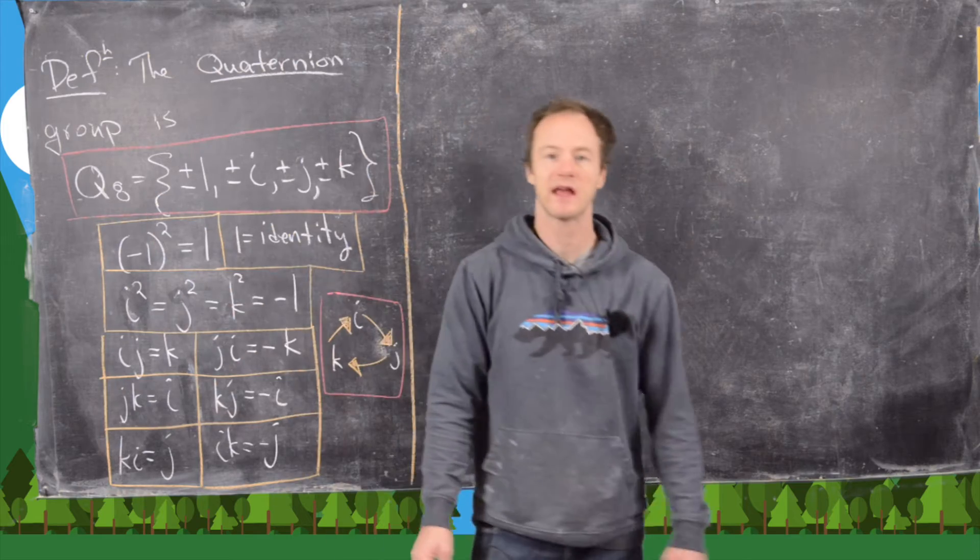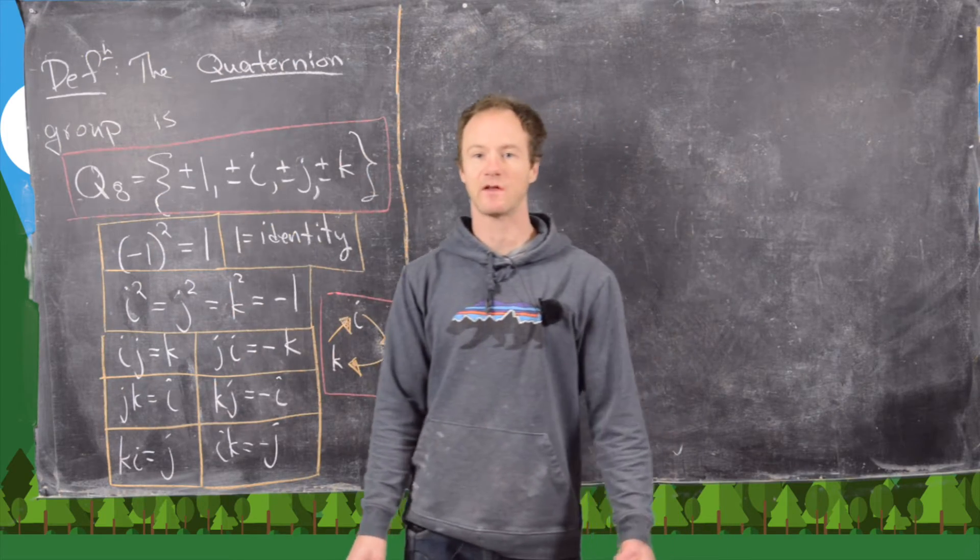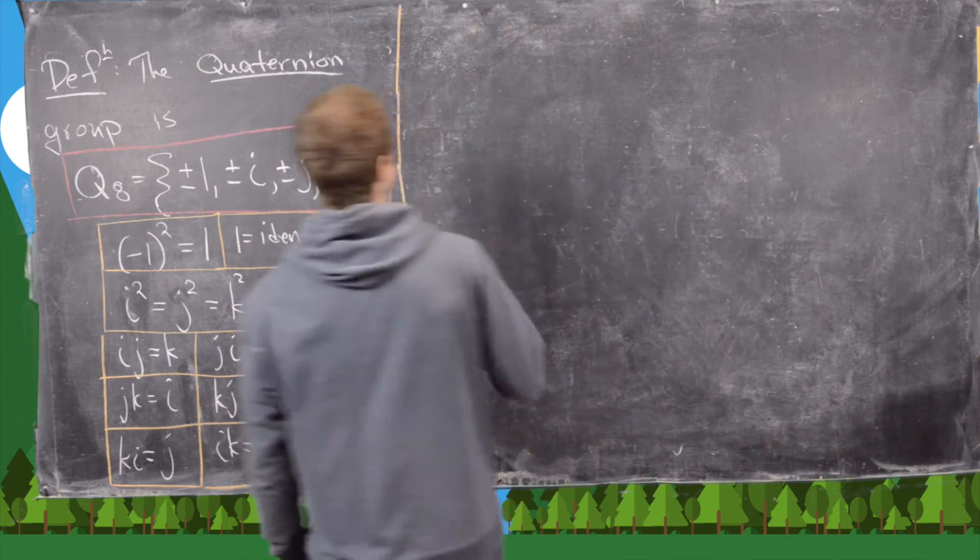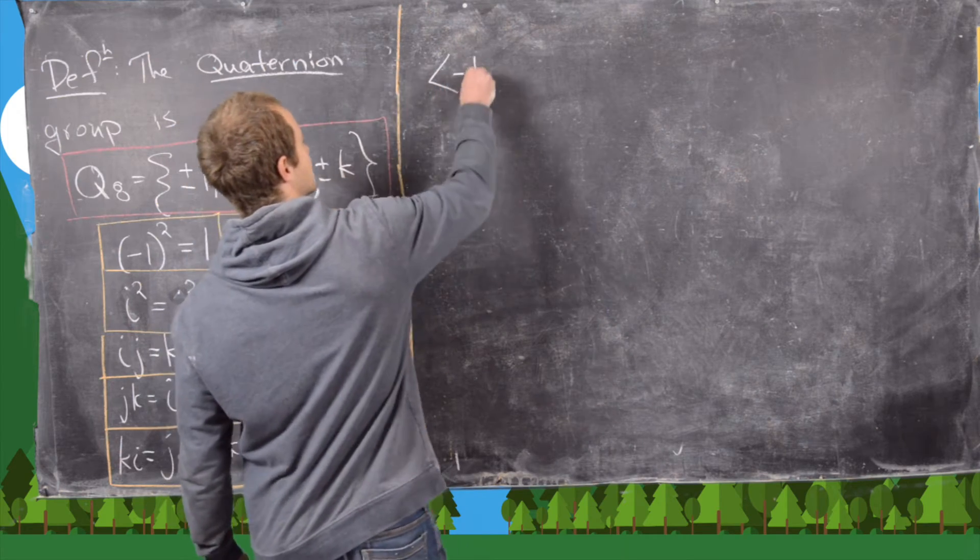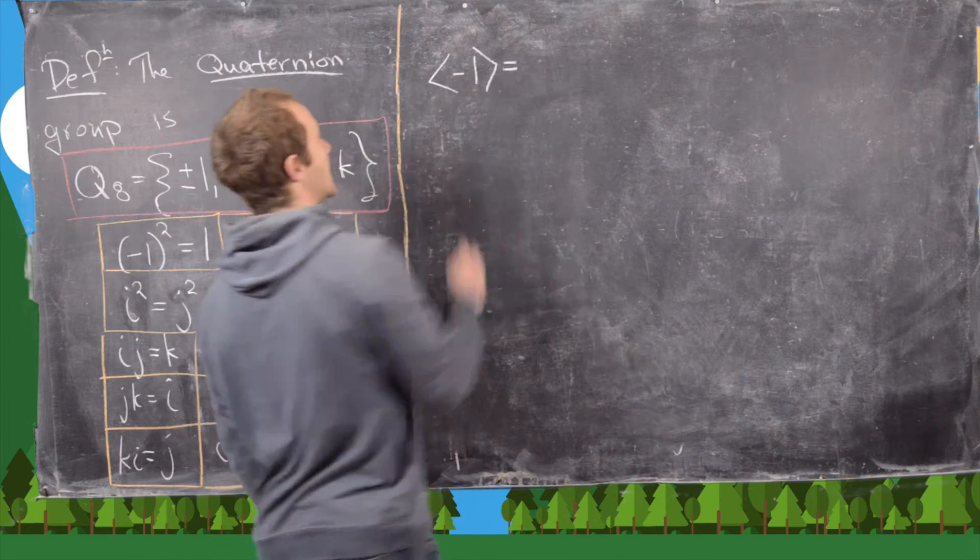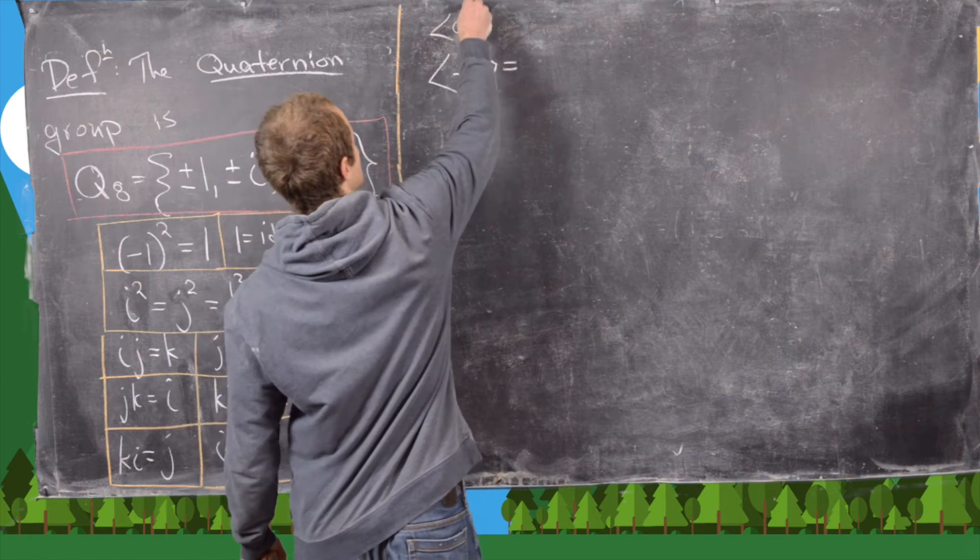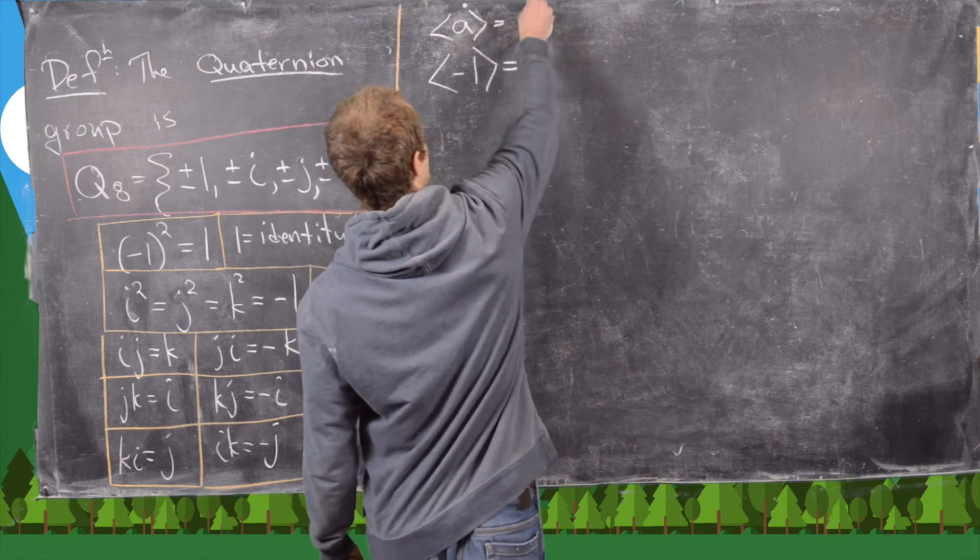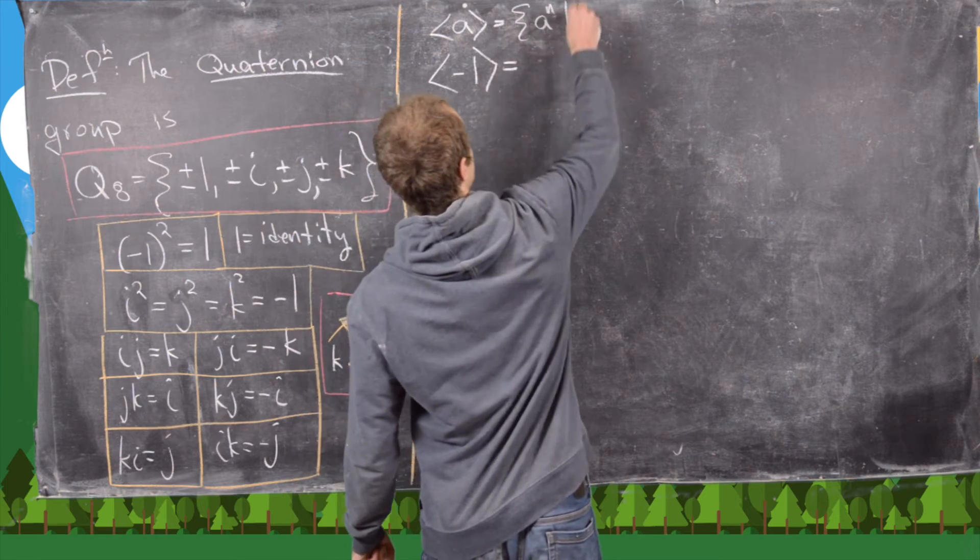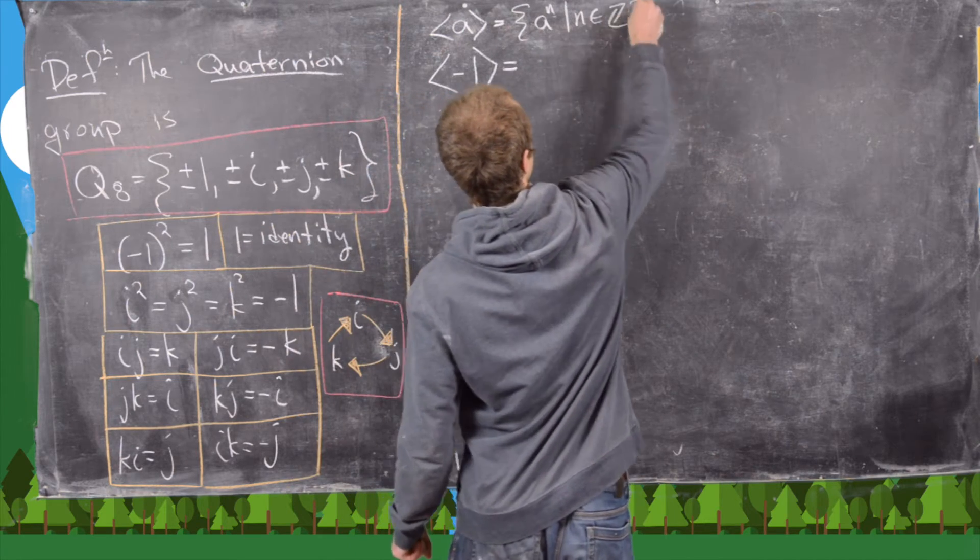this quaternion group q8. And we'll actually do that by looking at the cyclic subgroups. So first of all, let's look at the cyclic subgroup generated by minus 1. So just as a reminder before we get into it, the cyclic subgroup generated by a is all integer powers of a.